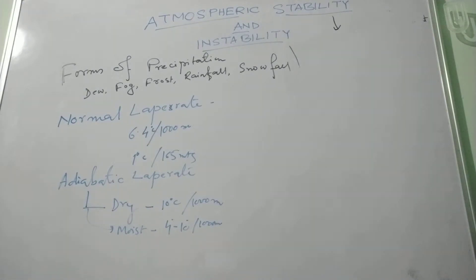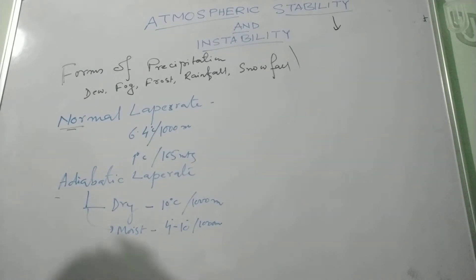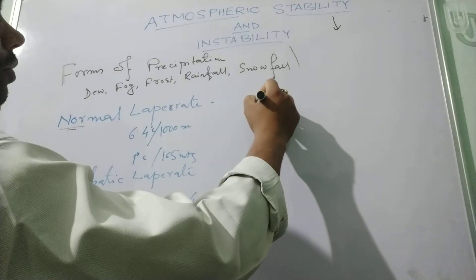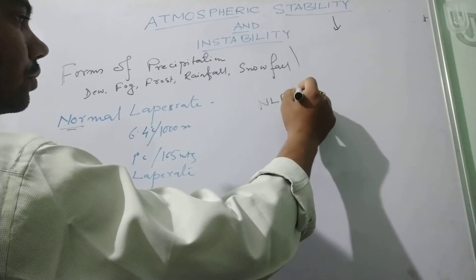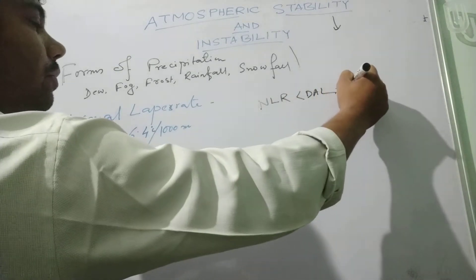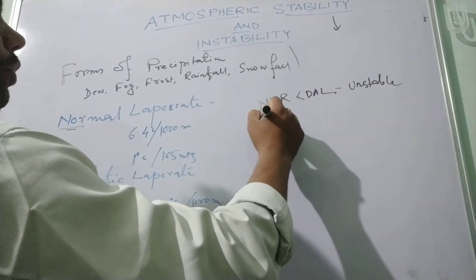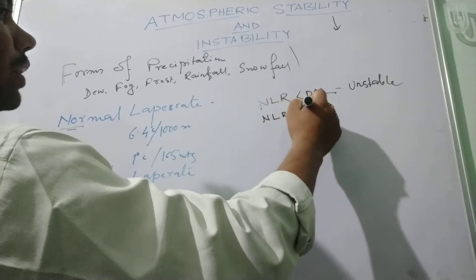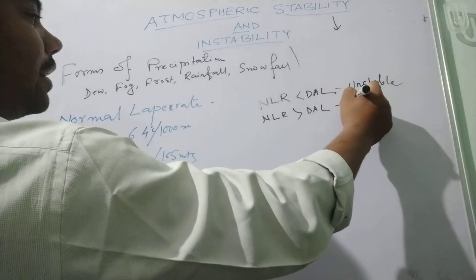So the stability and instability: when the normal lapse rate is higher than the dry adiabatic lapse rate, then the air becomes unstable. And when the normal lapse rate is lower than the dry adiabatic lapse rate, then the air becomes stable.